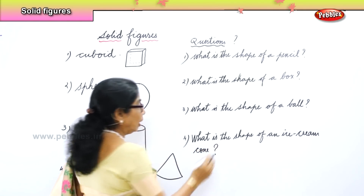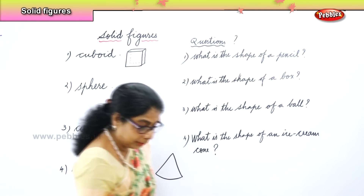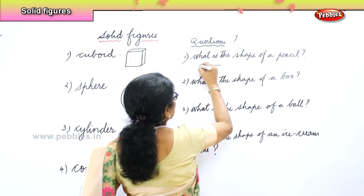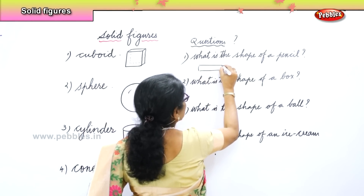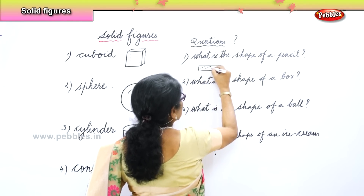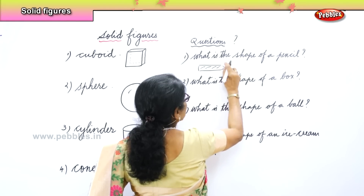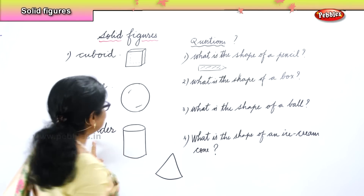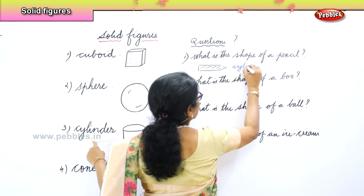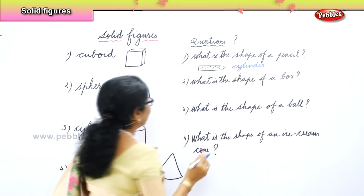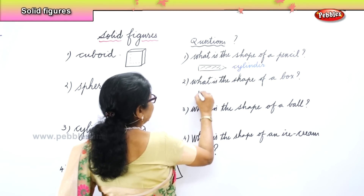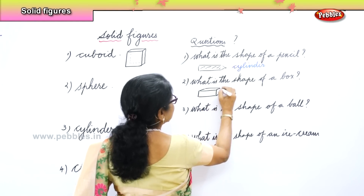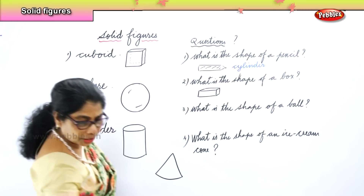Now we are going to write down what is the shape of each of these. When you talk about a pencil — the pencil is a cylinder. So what will you write? The shape of the pencil is cylinder. Now, what is the shape of a box? Any box you have — a square box or rectangular box — look at the shape. It is a cuboid shape.